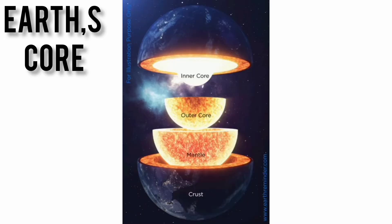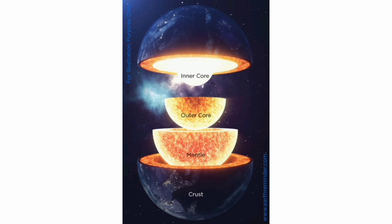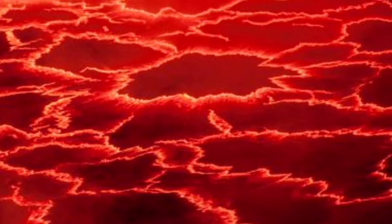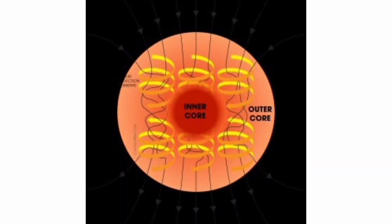Earth's core. The core is made up of solid iron and nickel, and it is at about 5,000 to 6,000 degrees Celsius, which is about the temperature of the photosphere of the Sun. Information about Earth's core comes from analysis of seismic waves and Earth's magnetic field.